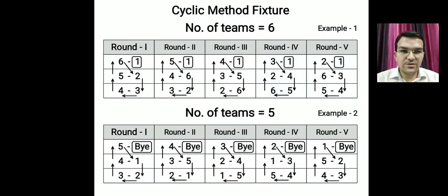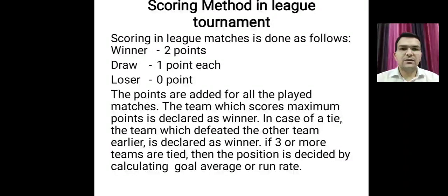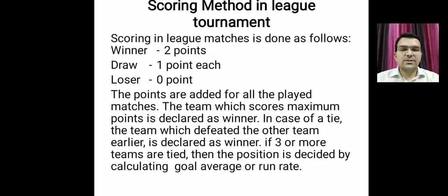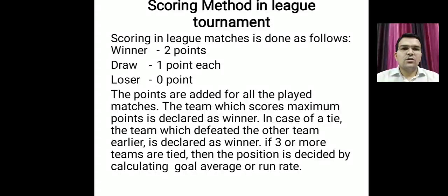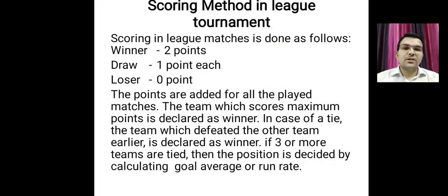Now let's discuss how scoring takes place in a league tournament. Every winner gets two points, the losing team gets zero points, and in a draw each team gets one point each.